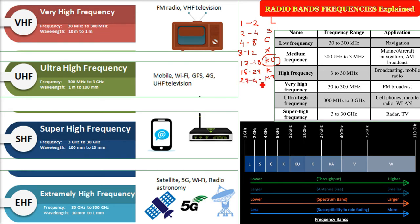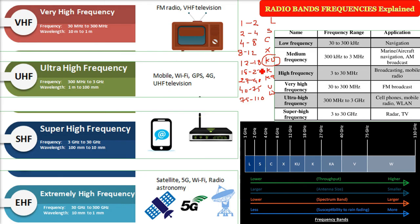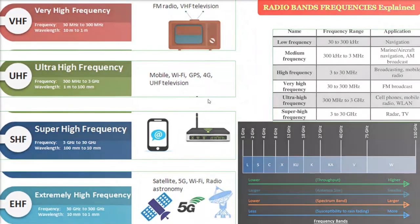Then we have Ka band at 27 to 40 gigahertz, V band from 40 to 75 gigahertz, and W band from 75 to 110 gigahertz. So to summarize: L, S, C, X, Ku, K, Ka, V, W. Thank you.